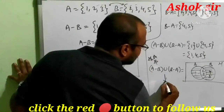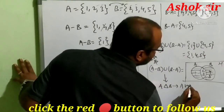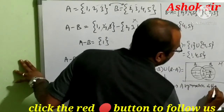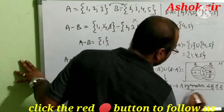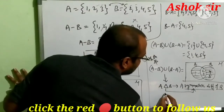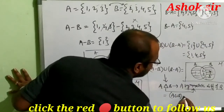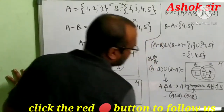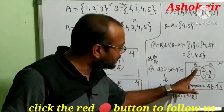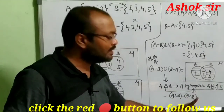We can also call A minus B union B minus A as A delta B, that is, A symmetric difference B. This delta symbol is the symmetric difference symbol. A delta B is also equal to A union B minus A intersection B. Sometimes they may give the question to show that these two are equal — they produce the same diagram and same answer: A delta B equals A union B minus A intersection B.